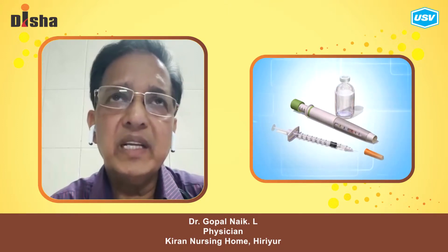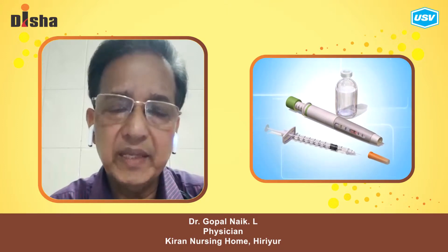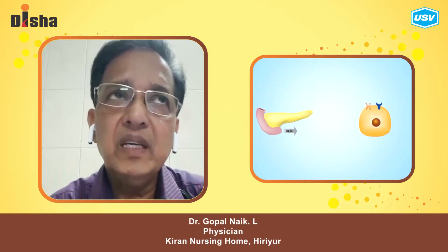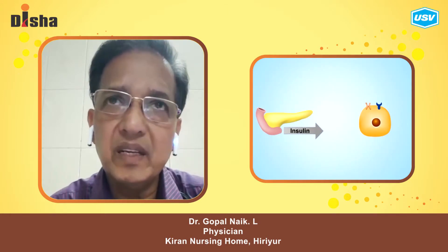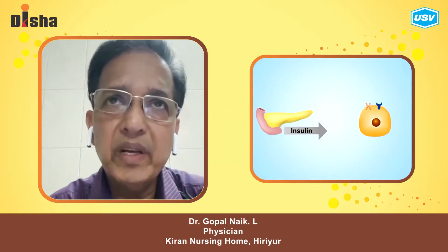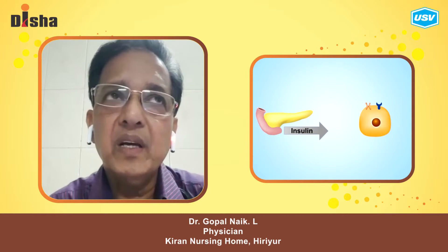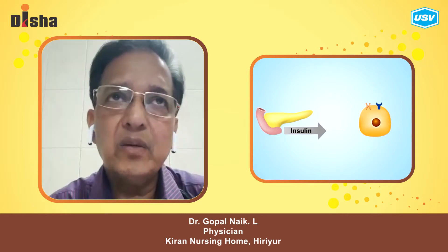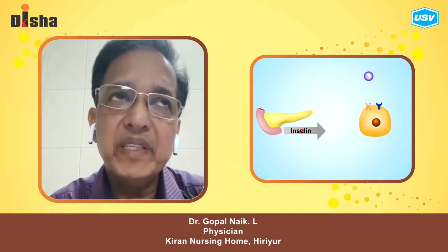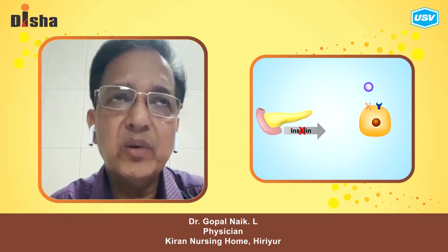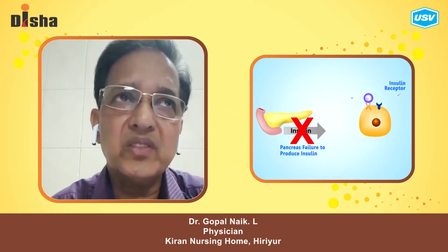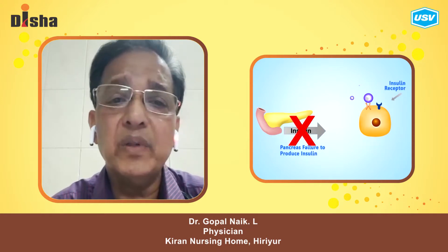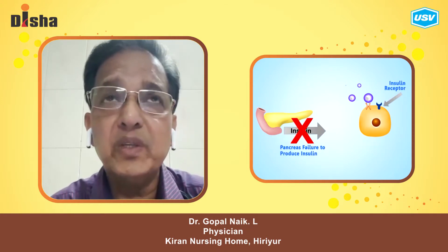In Type 1 diabetes, the pancreas or islet cells are completely damaged. This is because of viral infection, especially the Coxsackie virus.